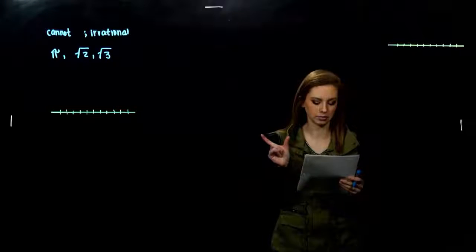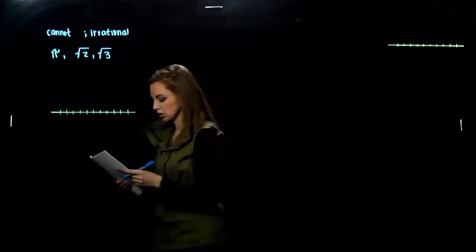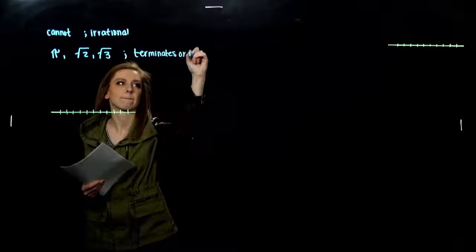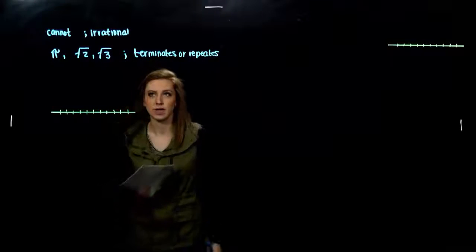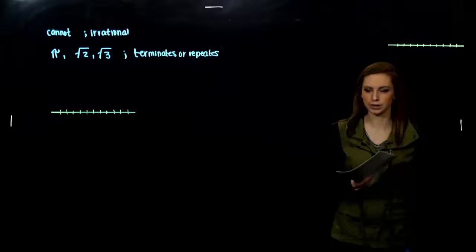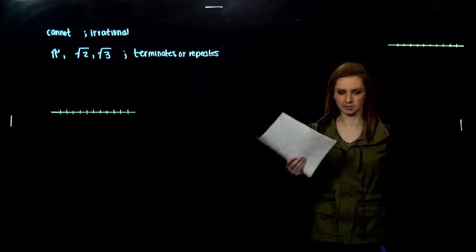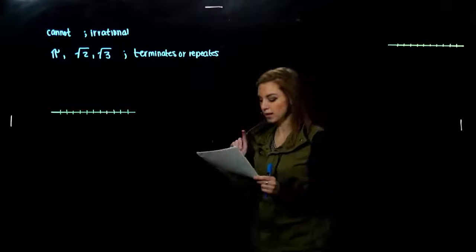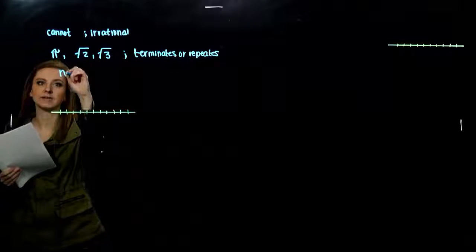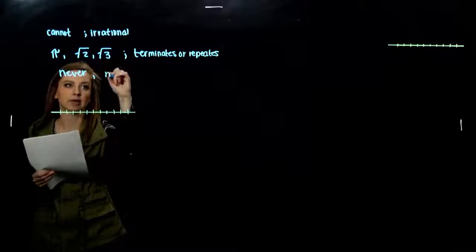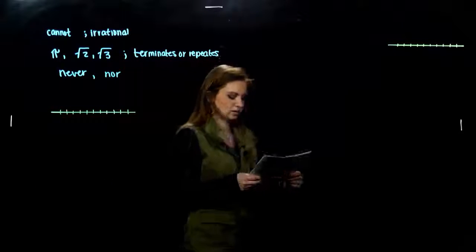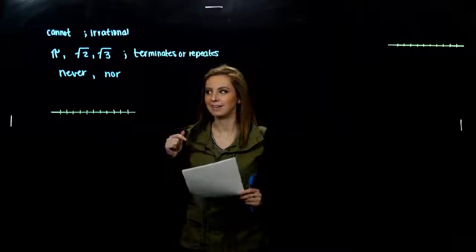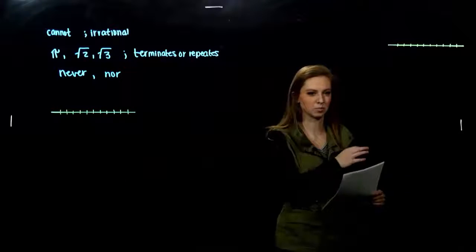Decimal notation for rational numbers either terminates or it repeats. We saw that in the last part of this section when we were doing the division — sometimes it ended and divided evenly, sometimes it kept doing the same pattern for a remainder over and over again. But with irrational numbers, they never terminate and they never repeat. It's a never-ending number that doesn't repeat anywhere in the entirety of the number.